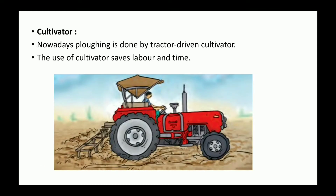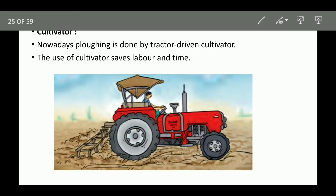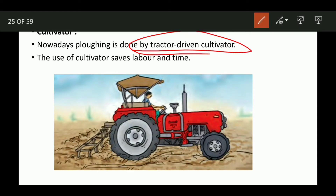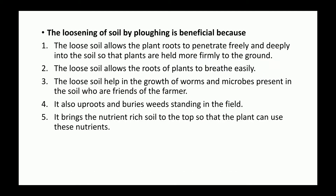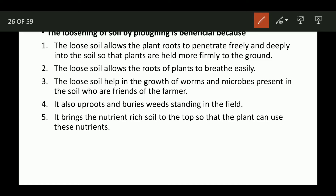The third implement is the cultivator. Nowadays, plowing is done by a tractor-driven cultivator. The use of cultivators saves labor and time. The turning of soil by plowing is beneficial because the loose soil allows plant roots to penetrate freely and deeply into the soil, so that plants are held more firmly to the ground.